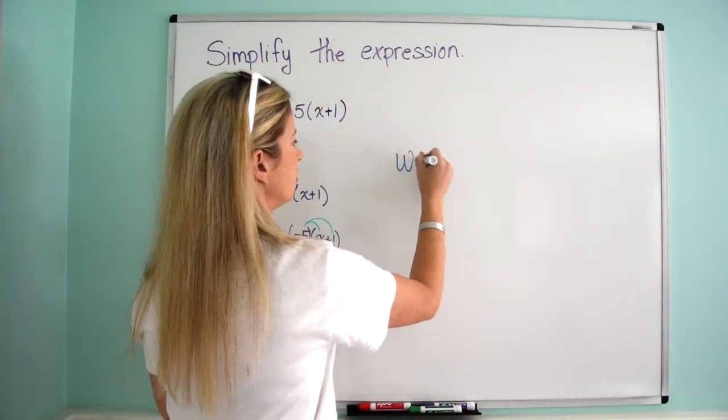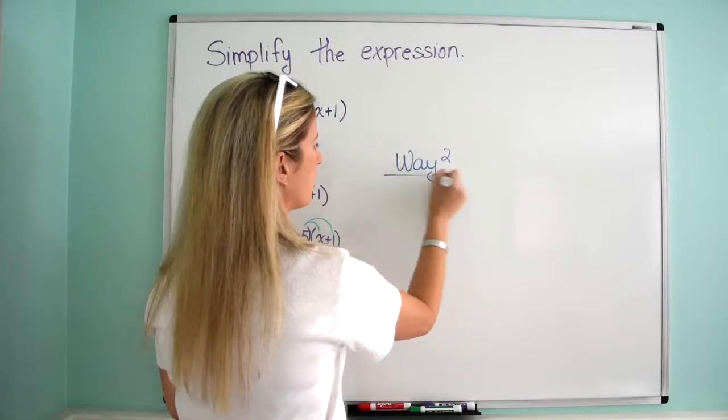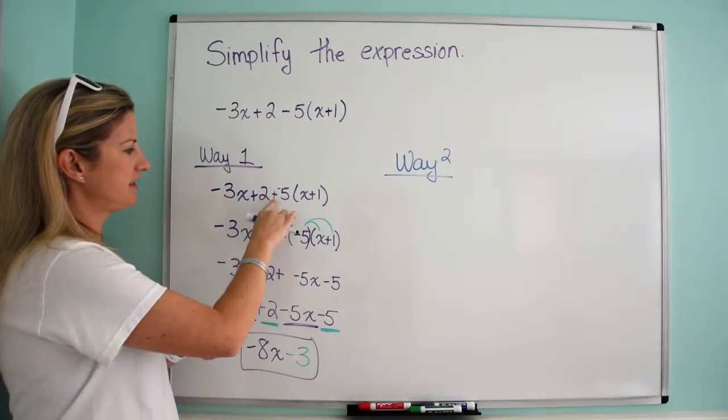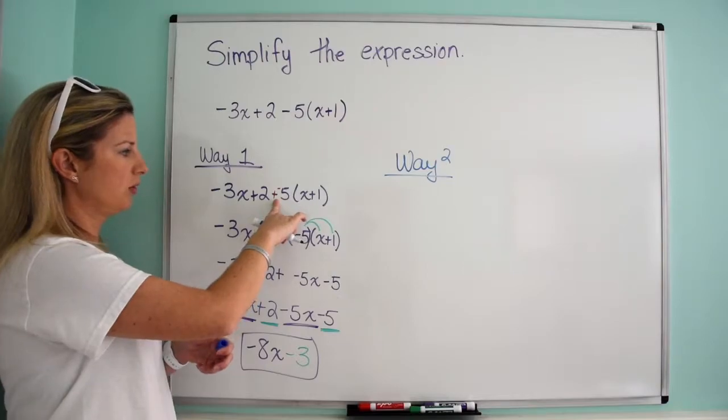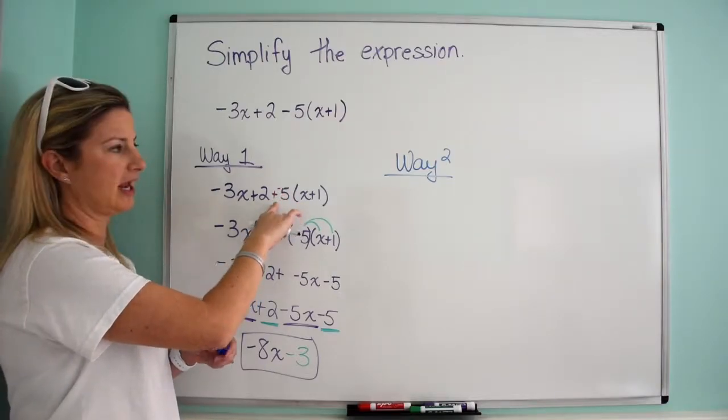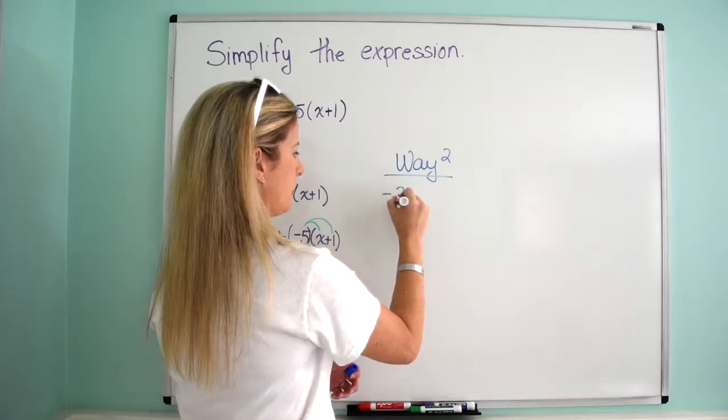So way 2 is not much different. It's just the fact that we don't pull the negative, we don't have the 5 pull the negative. So I'm going to rewrite the problem.